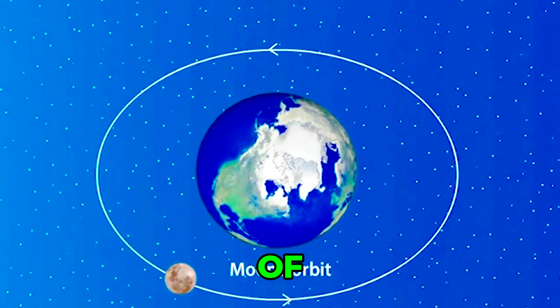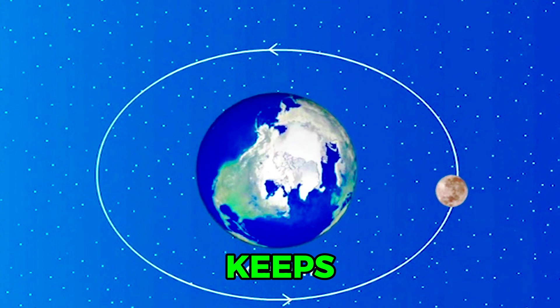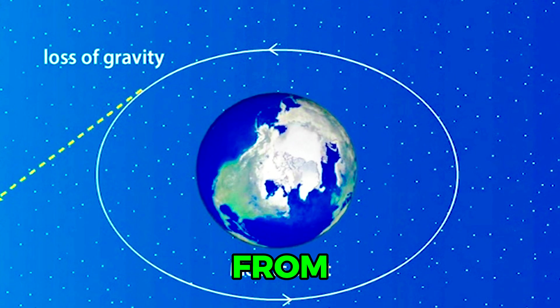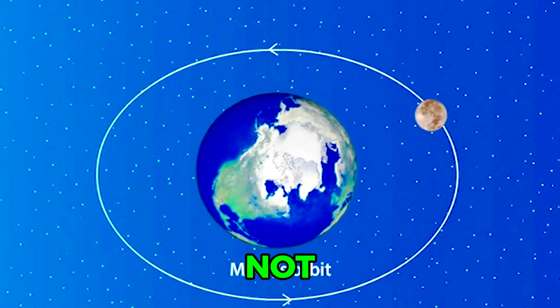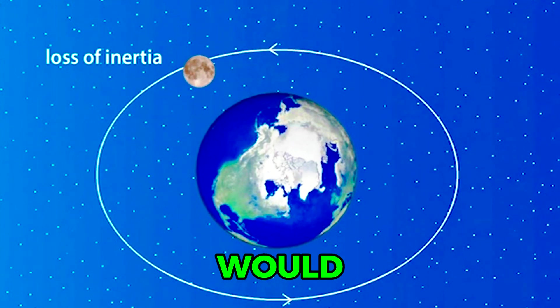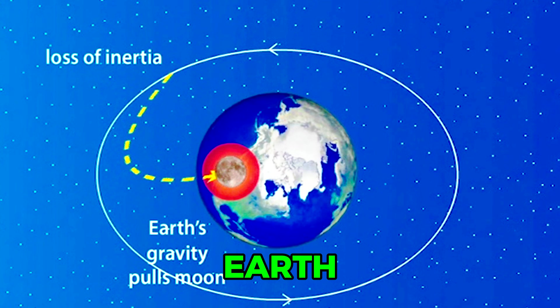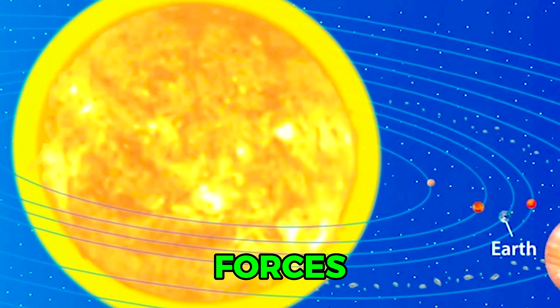The combination of gravity and inertia keeps the Moon moving in orbit around the Earth. If there were no gravitational pull on the Moon, it would move in a straight line away from the Earth into space. If the Moon did not have inertia, then it would be pulled by Earth's gravity and crash into Earth. The same forces keep the Earth in orbit around the Sun.